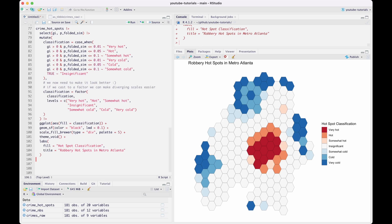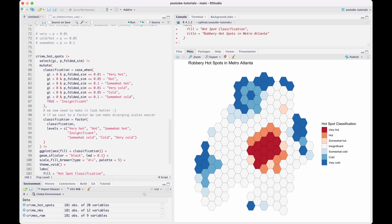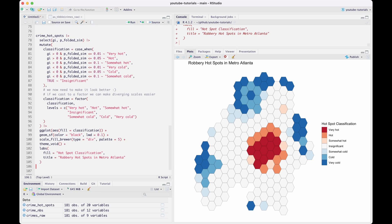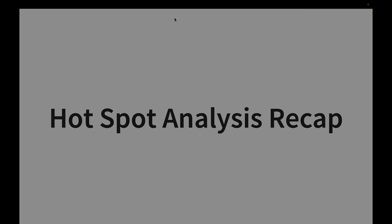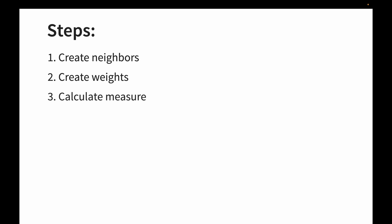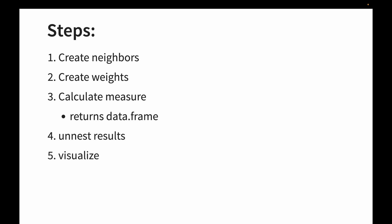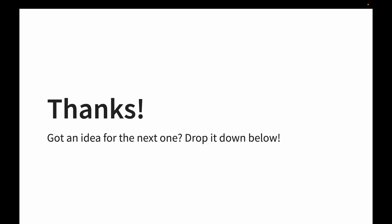I hope that was helpful and insightful to see how I would code through this. The key takeaway is: read in your dataset, identify what you want to analyze, create your neighbors and weights, calculate the statistics — which will often be in a dataframe format that you need to unnest — then classify it using dplyr and visualize it using ggplot. It's a very similar approach for all different statistics you might use from SFDEP or SPDEP. Hope that was helpful — have a good one.